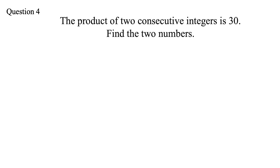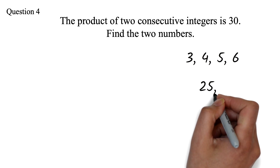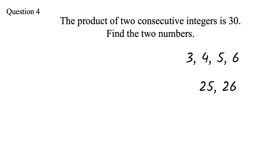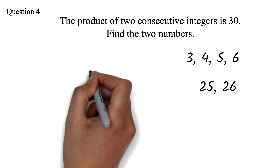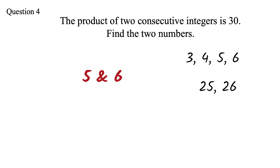Question 4: The product of 2 consecutive integers is 30. Find the 2 numbers. This is a question you can easily solve without using any mathematical methods. Consecutive integers are simply numbers that follow each other — 3, 4, 5, 6 are consecutive integers. We are looking for 2 numbers that multiply to get 30. The 2 numbers are 5 and 6. 5 times 6 is 30. Pretty straightforward if you know your multiplication table.